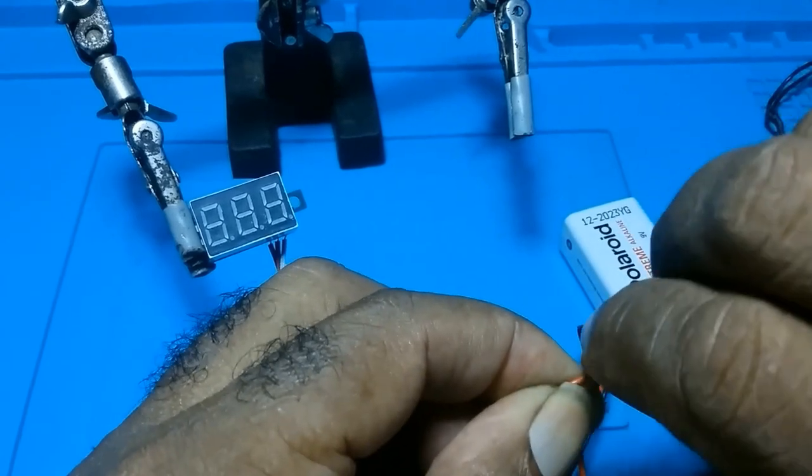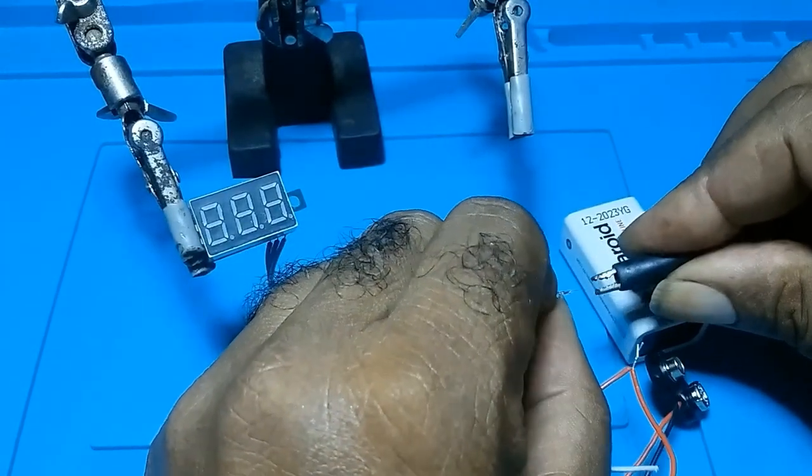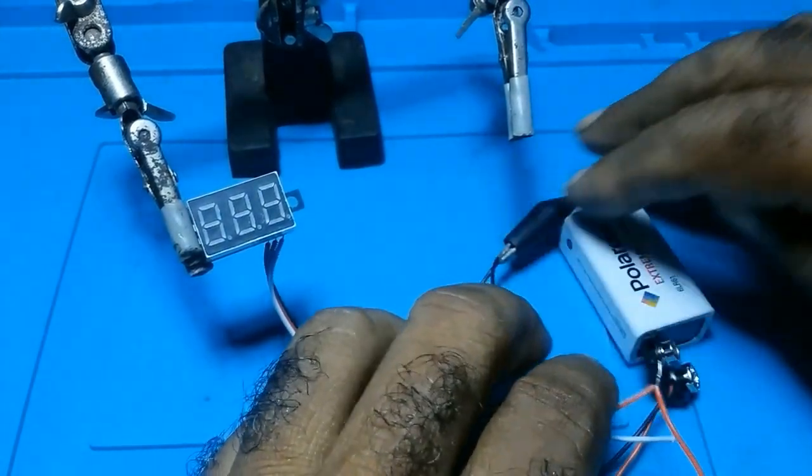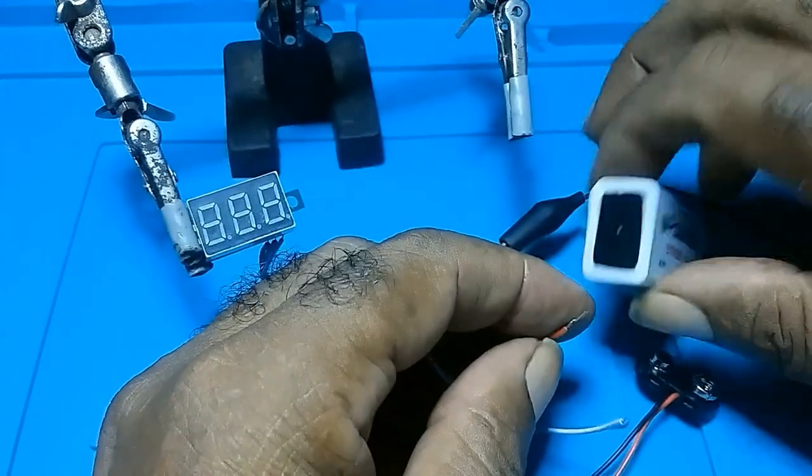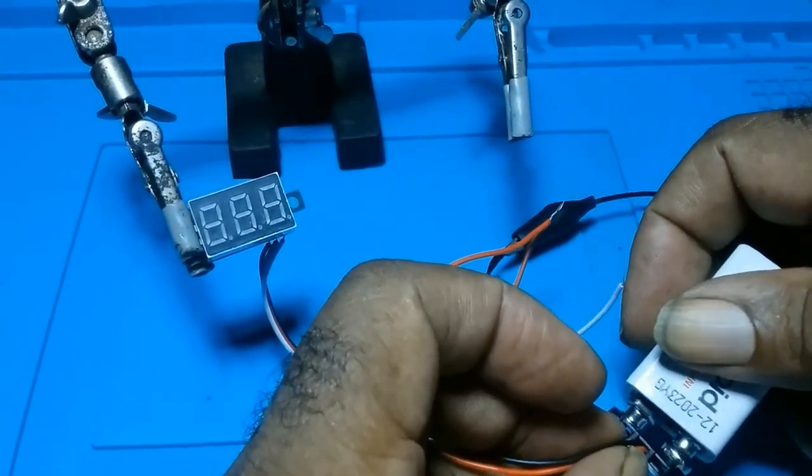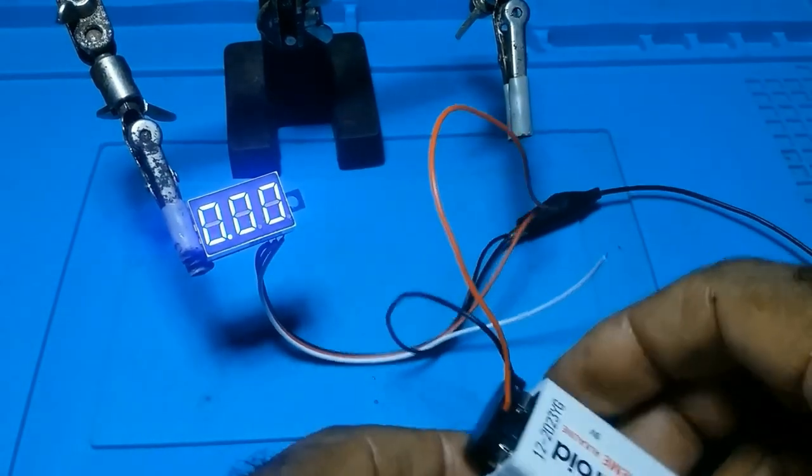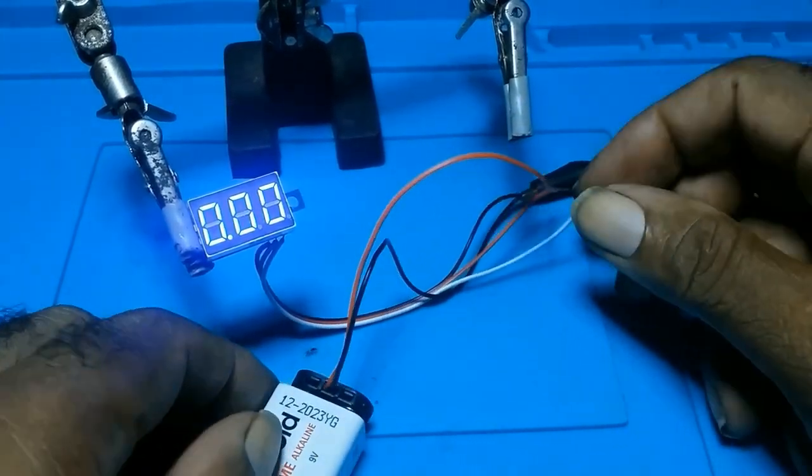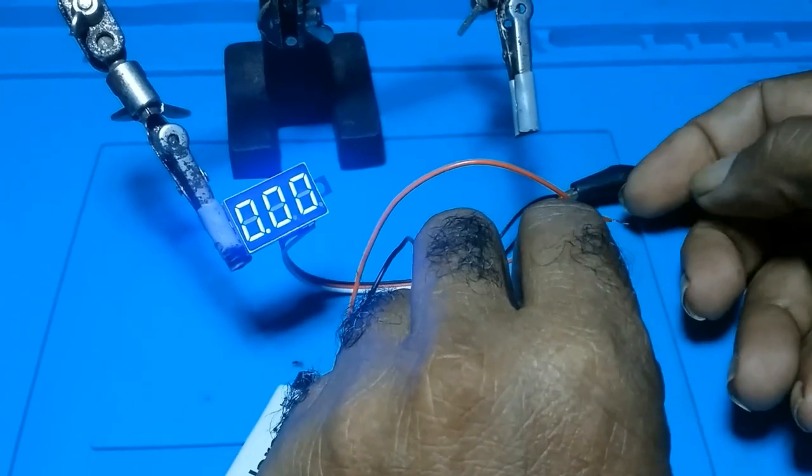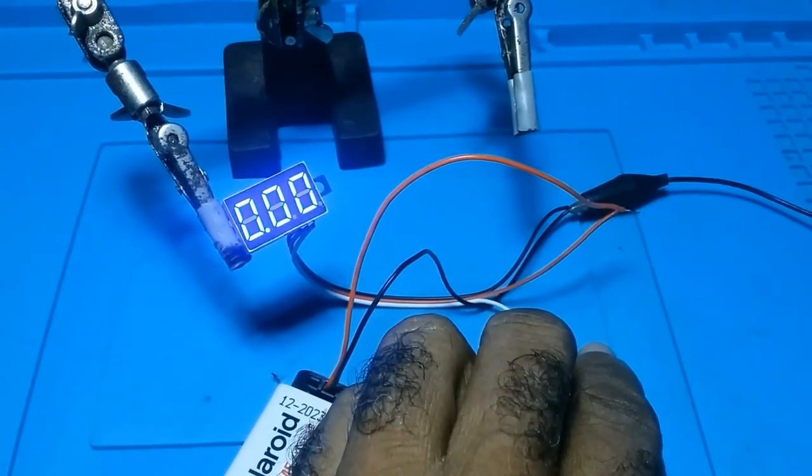You would connect a black lead here because this is continuity, then you connect your battery. Battery power is up, and your white wire is for whatever you want to measure.